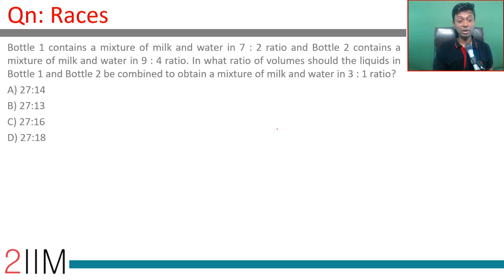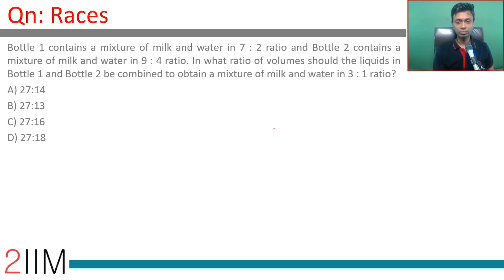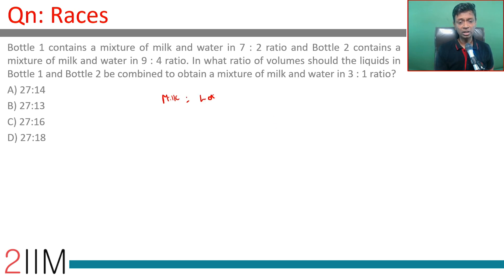Bottle 1 contains a mixture of milk and water in the ratio 7:2, and bottle 2 contains a mixture of milk and water in the ratio 9:4. In what ratio of volumes should the liquids in bottle 1 and bottle 2 be combined so that the mixture of milk and water is 3:1 in the final combination?